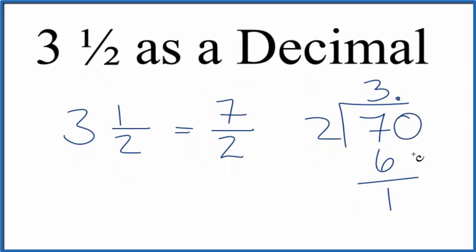Now we can put a 0 here, move that down, 10. 2 goes into 10, 5 times. So 3 and 1 half as a decimal, that is 3.5.